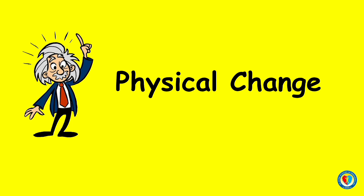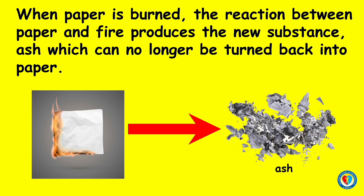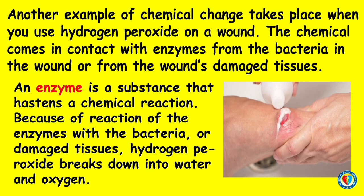That is all about physical change. Now, let's proceed to chemical change. Chemical change is a change that transforms a substance into another, and the transformation usually cannot be reversed. It happens when there is a chemical reaction. For example, when paper is burned, the reaction between paper and fire produces a new substance — ash — which can no longer be turned back into paper. Another example is when you use hydrogen peroxide on a wound. The chemical comes in contact with enzymes from the bacteria or damaged tissues. An enzyme is a substance that has a chemical reaction. Because of the chemical reaction of enzymes with the bacteria or damaged tissues, hydrogen peroxide breaks down into water and oxygen.